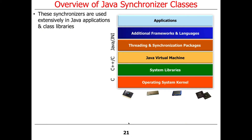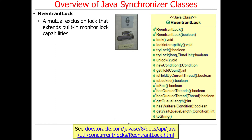These synchronizers are used all over the place in Java applications and class libraries. Probably the simplest synchronizer is called a ReentrantLock, which supports mutual exclusion — mutex is the acronym. It essentially extends the built-in monitor lock capabilities that come as part of the Java language. The Java language and virtual machine support very low-level mechanisms called synchronized statements or synchronized methods. ReentrantLock gives you a little more fine-grained control and a bit more operations than you get with simple synchronized statements and methods.